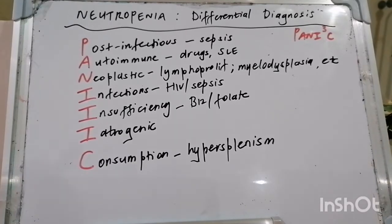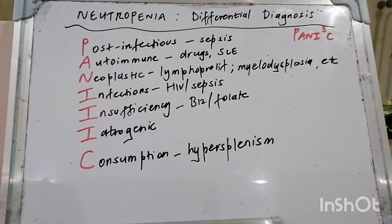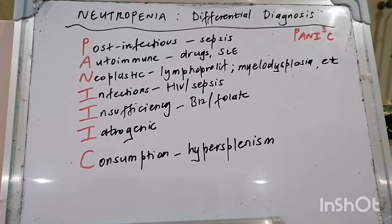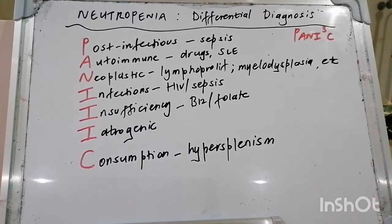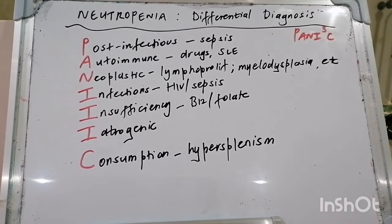Today we're addressing the topic of neutropenia, and the mnemonic is 'PANIC with three I's.' Quick jokes: two platelets and one red blood cell — one said 'I heard you two finally tied the clot,' the other said 'coagulations!' And what did one red blood cell say to another having a bad day? 'Be positive!'